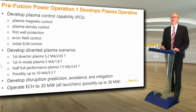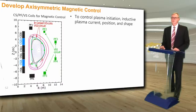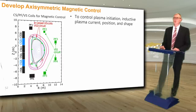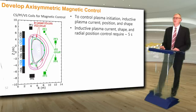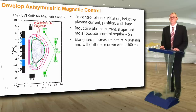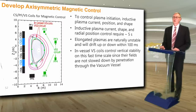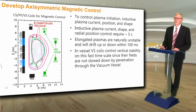The PCS will control the CS, PF, and in-vessel VS magnets to control plasma initiation, inductive plasma current, position, and shape. The inductive plasma current, shape, and radial position control need about 5 seconds of settling time. But elongated plasmas are naturally unstable and will drift up or down within about 100 milliseconds, so we need in-vessel VS coils to control the vertical stability on this fast timescale since their fields are not slowed down by penetration through the vacuum vessel. The vertical position is also controlled on a longer timescale with the slower ex-vessel VS1 system of PF coils.